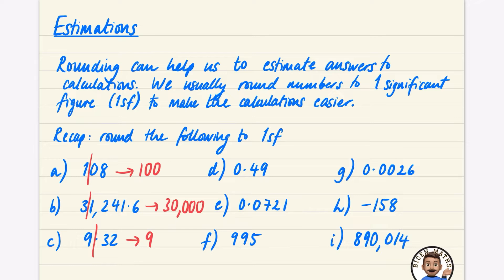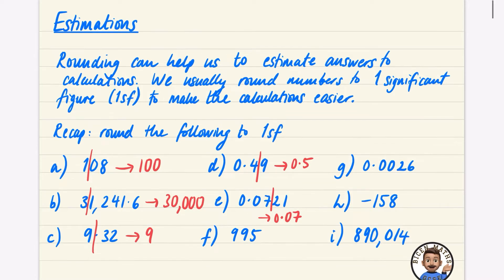Now things change a little bit — you might think the first significant figure is a zero, but we don't include leading zeros as significant figures. For 0.049, we draw the line after the four; the nine makes it round up to 0.5. For 0.072, the zeros don't count, so we draw after the seven; the two means it stays as 0.07. For 995, the first significant figure is nine; it rounds up to 1,000, which makes sense as 995 is closer to 1,000 than to 900. For 0.0026, the two is the first significant figure and the six makes it round up to 0.003.